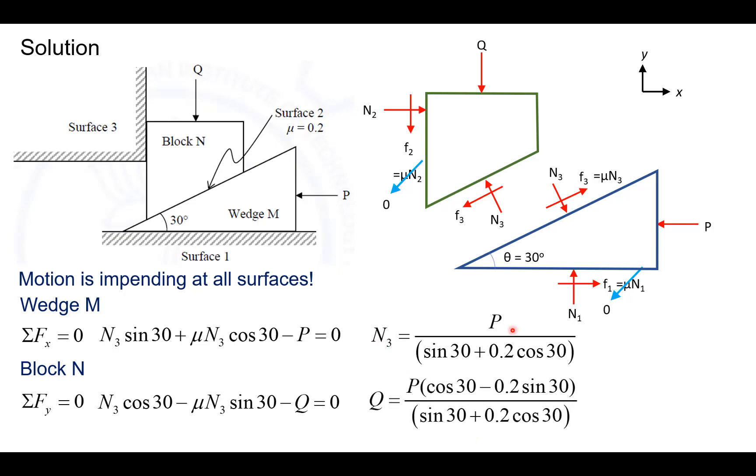Now, if we replace N3 with this expression above, we can see that Q equals P into this ratio and in our question, P is given in terms of Q. So, we reframe it and we can see that this expression inside the box bracket basically represents alpha. If we were to simplify this expression, we would get P equaling 0.88Q.